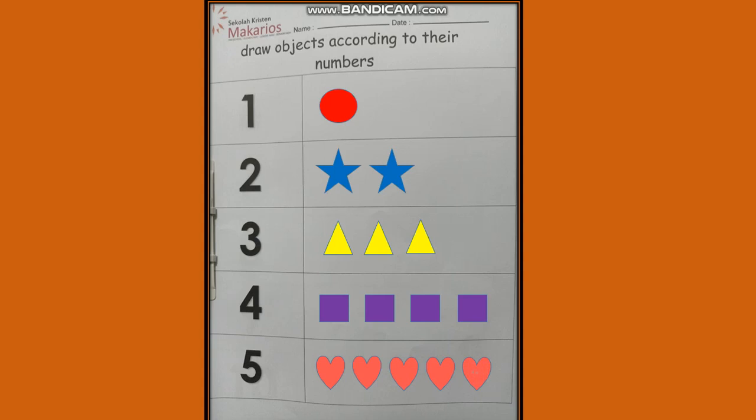But if you want to copy like Ma'am Intan did, it's okay. One circle, two stars, three triangles, four squares, five hearts. But if you want to draw your own object, that's very good.